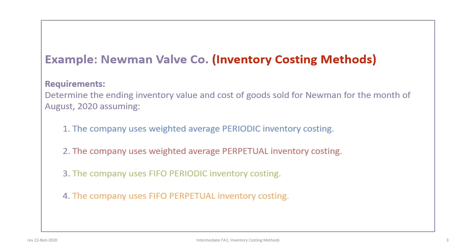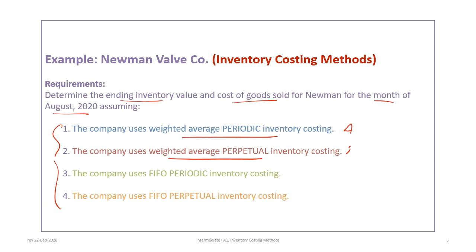This tutorial is based on the Newman Valve Company example. Please download the correct file so you can follow along and review the background information before proceeding. This problem has four requirements: to determine the ending inventory value and cost of goods sold for the month of August under four different approaches. Weighted average periodic is covered in tutorial A, weighted average perpetual in tutorial 16b, and periodic and FIFO perpetual in tutorial 16c.